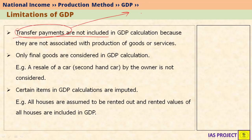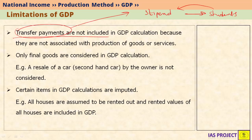Transfer payments are simply those payments which do not expect a return. For example, if you give a stipend to college students, you do not expect any goods or services from them — you are simply giving them the stipend. Similarly, pension given to old-age people is a transfer payment; old people will not give back any goods or services to the government, but the government still gives them pension. GDP does not consider transfer payments because they are not given in exchange for goods and services.